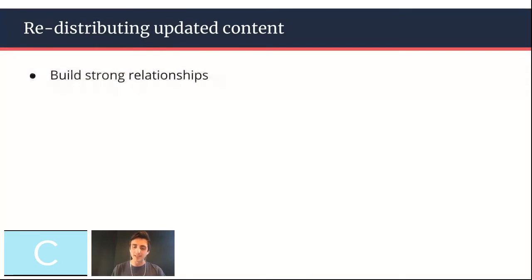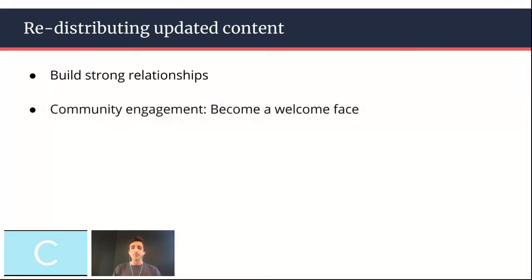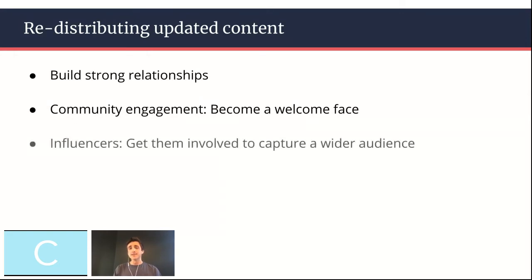Once you've updated and refreshed your content, how do you get it in front of fresh eyes? Distribution is a whole topic in itself and I'm going to touch upon it very lightly here. The best distribution strategies are built on strong relationship building. Whatever channel you can think of — unless it's a channel that encourages the sharing of content — you want to go there to engage with the audience and build strong relationships with people in it. Community engagement, for example: join Facebook groups and Slack communities and become a welcome face that actually contributes to the conversation. Get influencers involved in the content itself in order to capture a wider audience.